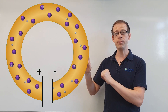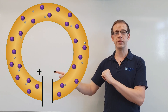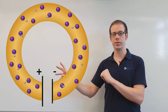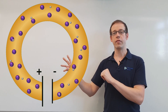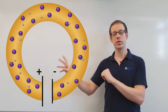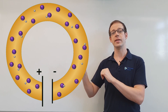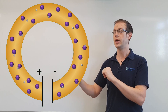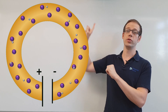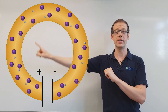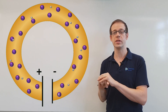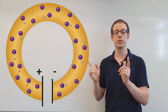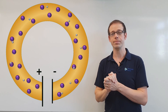At the same time, the positive terminal has a lack of electrons and is therefore slightly positively charged, which means the electrons - being negatively charged - are attracted to the positive terminal, again just like the opposite poles of a magnet.